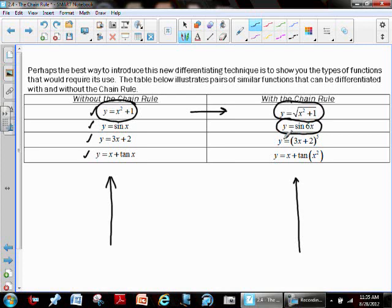And of course, y equals 3x plus 2 raised to the 5th, all sorts of ways that one can take that derivative. The chain rule, obviously, will be easiest way. And of course, y equals x plus the tangent of x squared is the fact that we are taking the tangent of some variable raised to a power that's going to necessitate the chain rule.